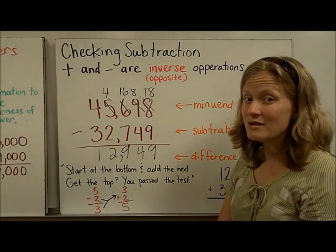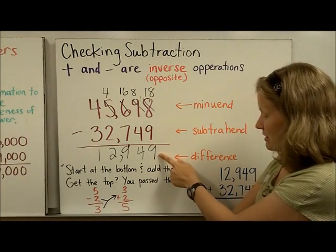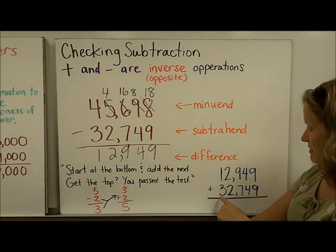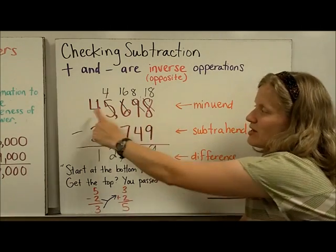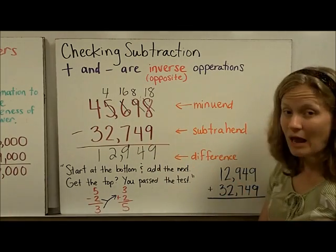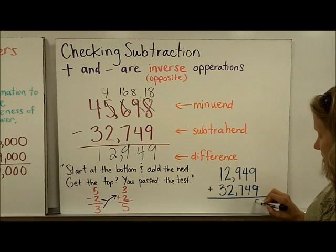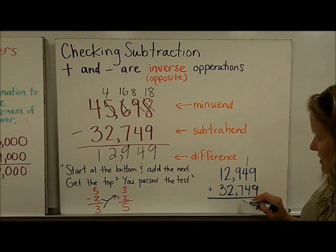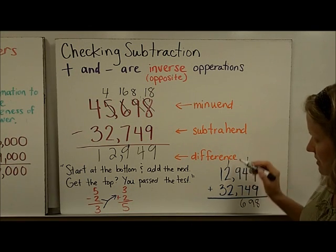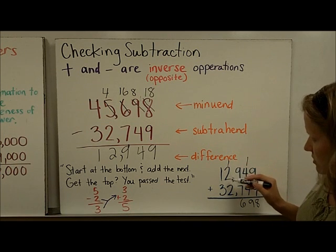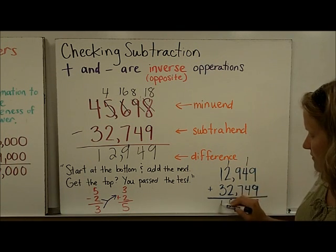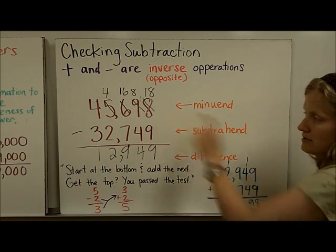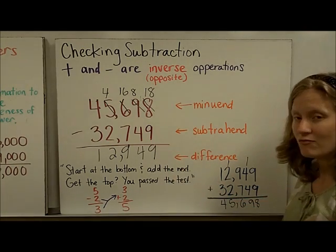Now, in order to check my difference, my answer, I'm going to add this, twelve thousand nine hundred forty nine, plus the subtrahend that I took away, thirty two thousand seven hundred forty nine. If I get this as my sum when I add them together, then I know I'm right. Nine plus nine is eighteen. Carry. One plus four plus four is nine. Nine plus seven is sixteen. I need to carry my tens. One, that's five, and that's four. Forty five thousand six hundred ninety eight. And because I got what I started with, I know that I got a correct difference here.